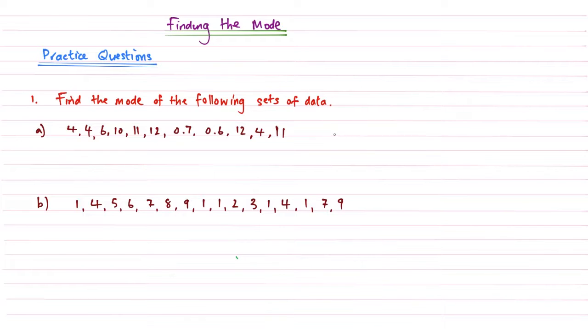Okay, so you've had a go at those two practice questions. Let's just quickly go through the answers. The mode is the number that appears the most. If we have a look at the top row, we can see quite clearly that the number that appears the most in this set of numbers is four. So the mode for question A is going to be four.